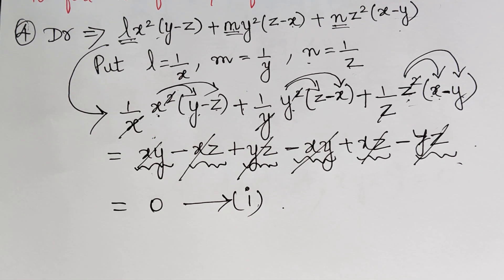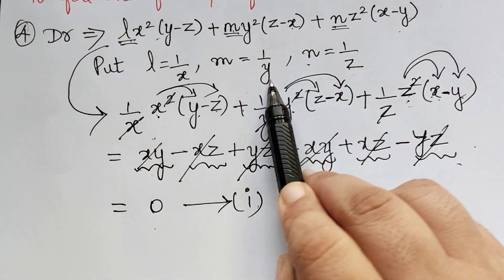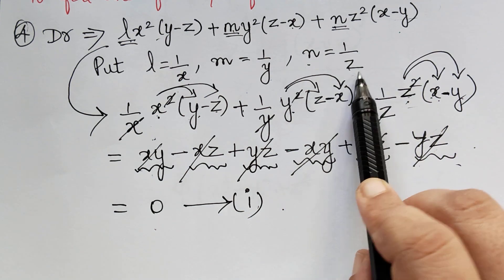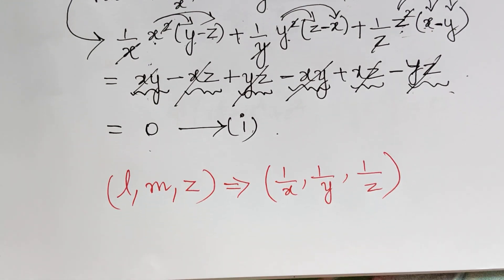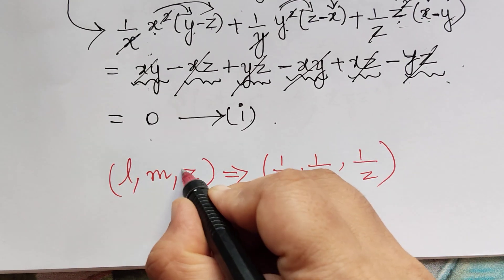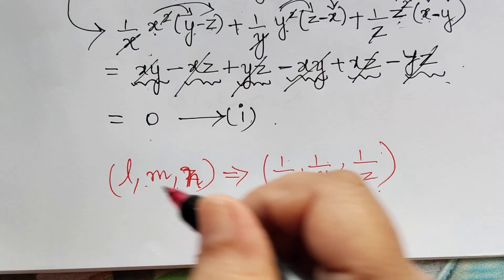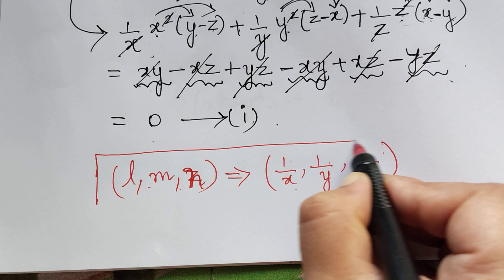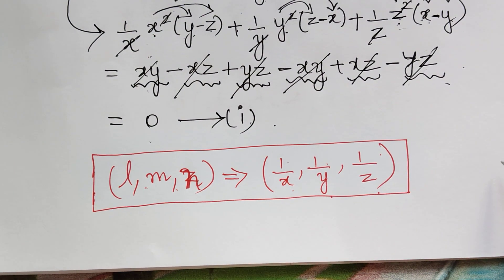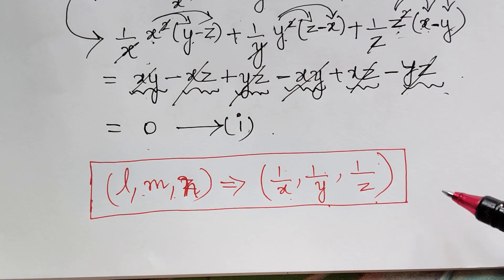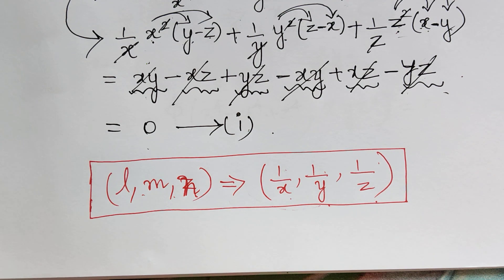The first set of multipliers that made the denominator zero is L = 1 by x, M = 1 by y, and N = 1 by z. Using these multipliers, we will find the first solution u. To find the second solution v, we need another set of multipliers different from the first set.